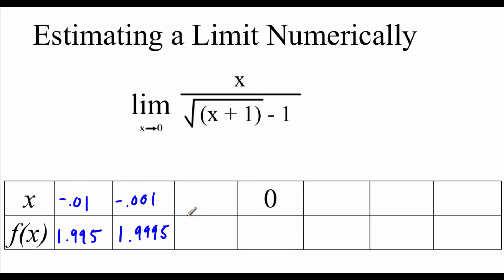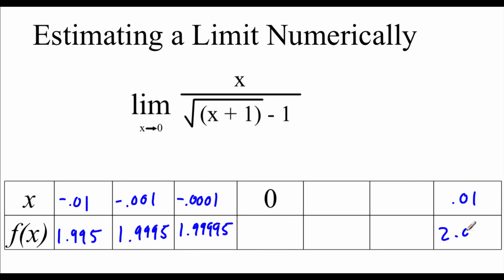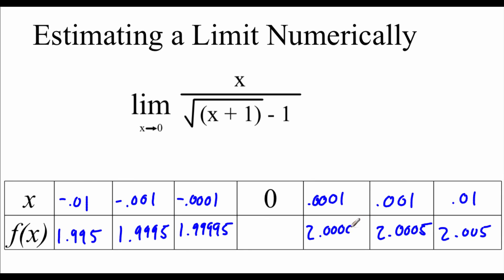Moving even closer to 0, we plug in negative 0.0001 and get 1.99995. Now approaching 0 from the right-hand side: starting at 0.01, we get 2.005. Moving closer with 0.001, we get 2.0005. And even closer at 0.0001, we get 2.00005.